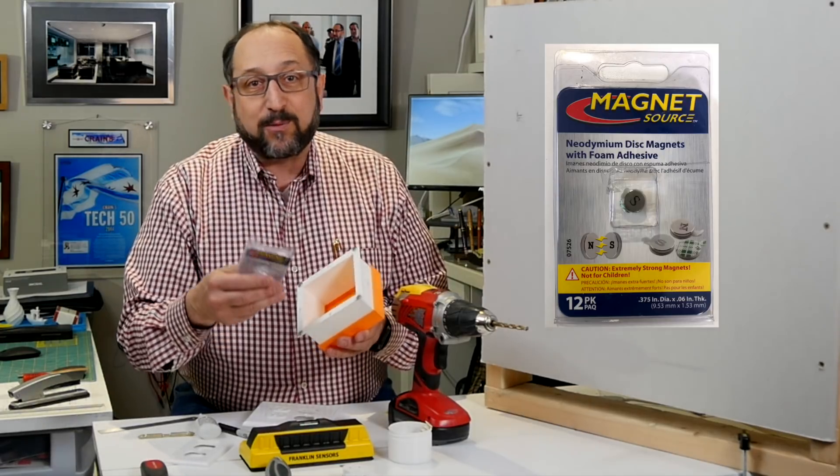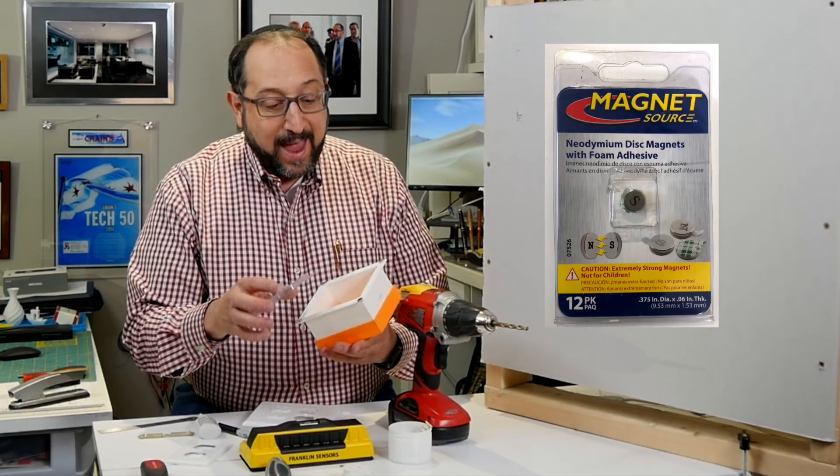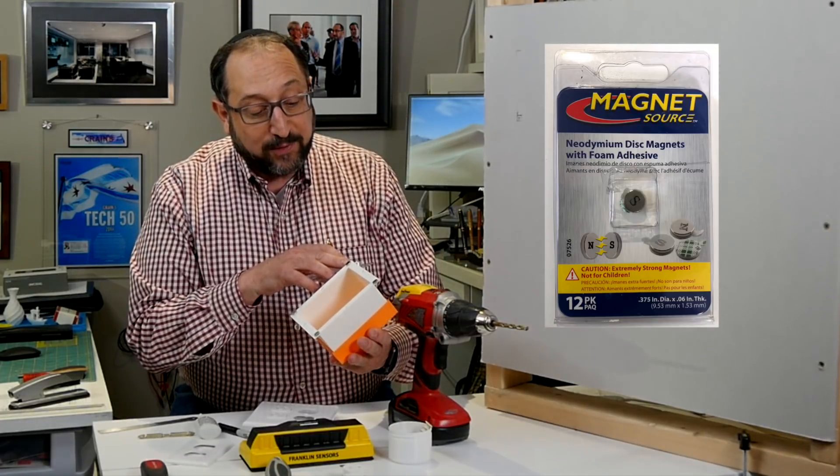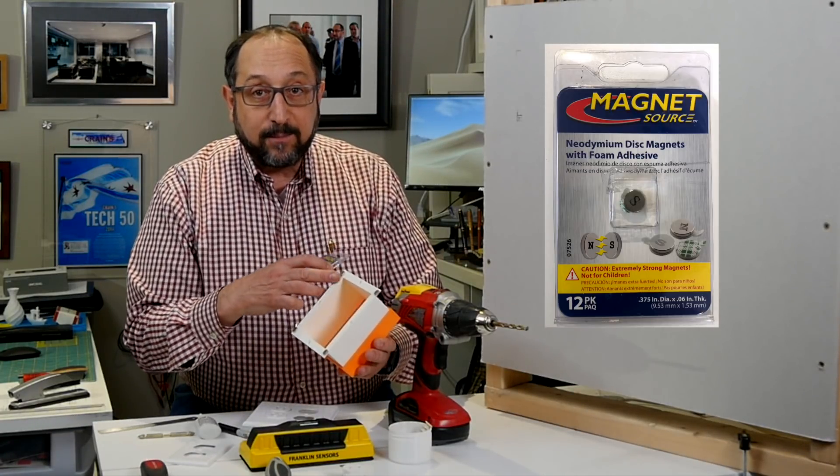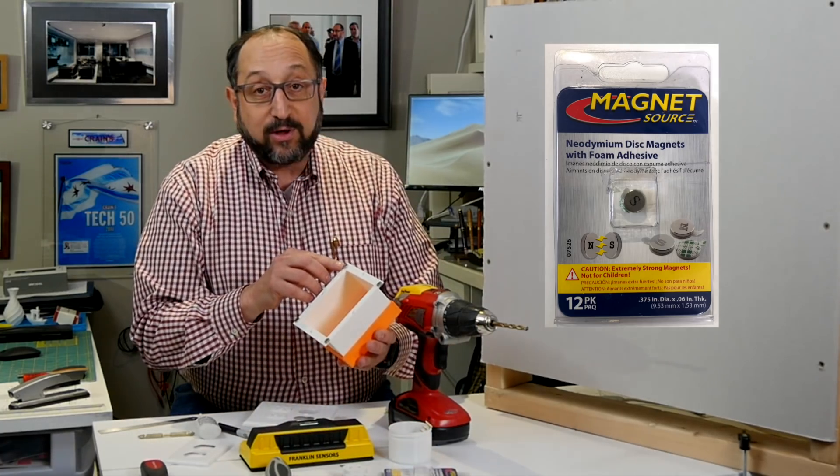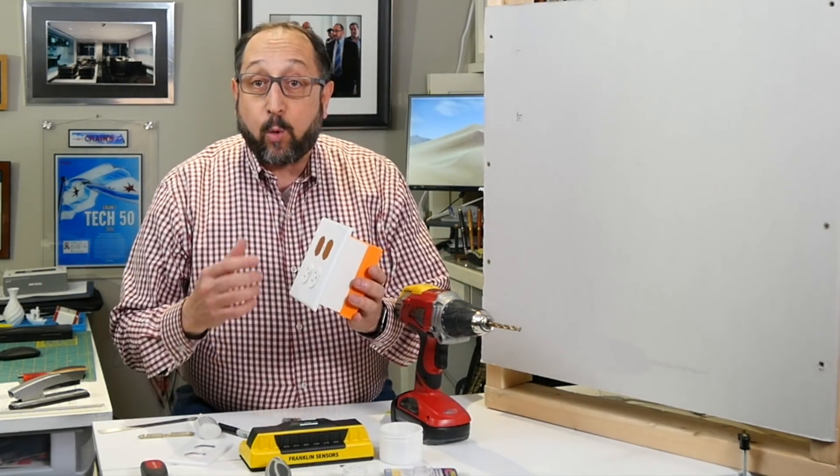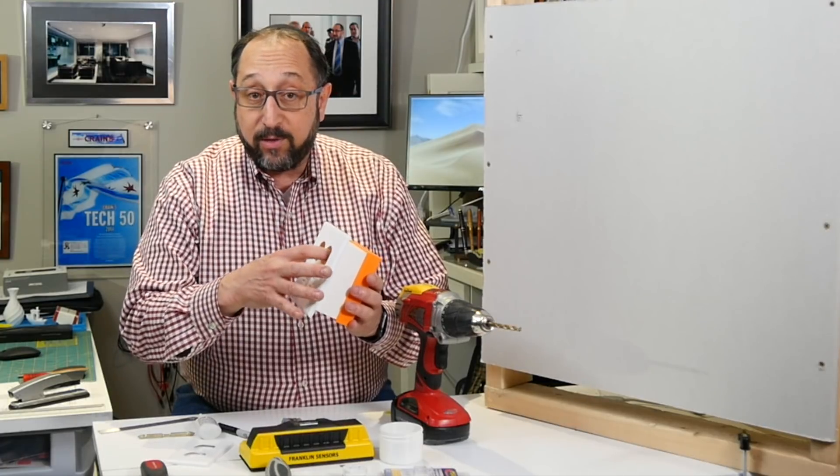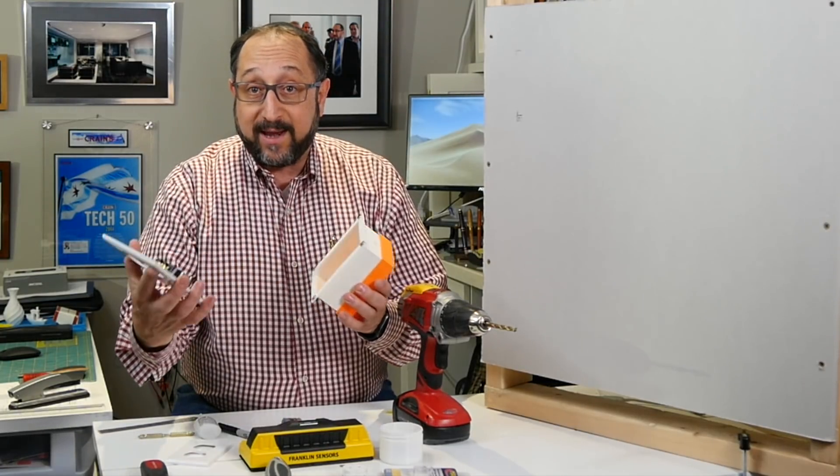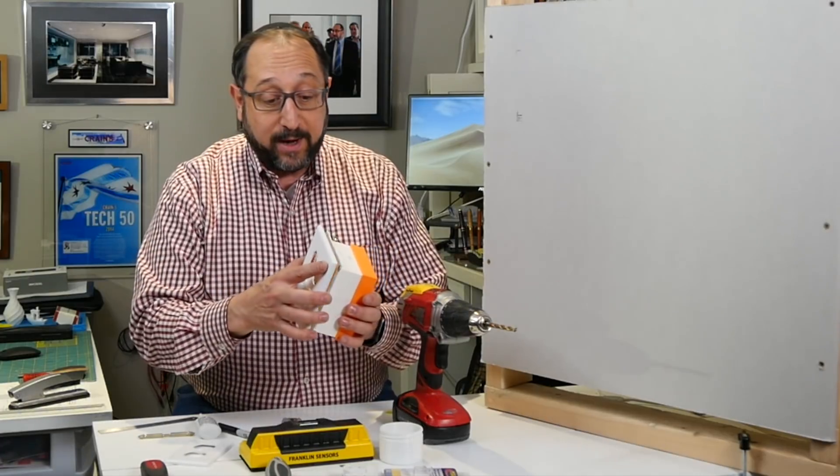They're double the price, but we're still talking a few bucks here. Good ones will be marked with a north and a south pole, and therefore north goes to south and vice versa. These magnets are quite strong. If you don't know this is here, you will have trouble getting it open. You wouldn't know to open it up.